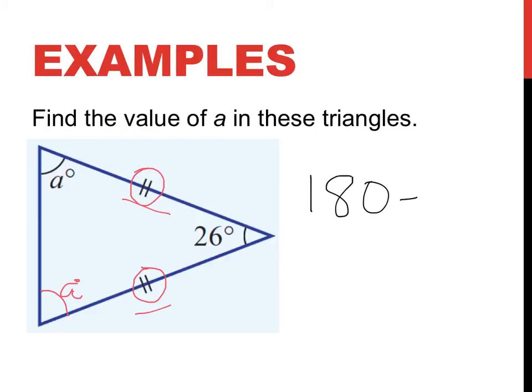So 180 minus 26 would give me 180 minus 20 is 160. See if you know what I'm doing, I'm just partitioning this number so 180 minus 20 is 160, minus another 6 is 154.